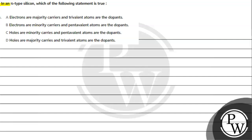Let's see the question. The question says: in an n-type silicon, which of the following statement is true? Option A: electrons are majority carriers and trivalent atoms are the dopants. Option B: electrons are minority carriers and pentavalent atoms are the dopants. Option C: holes are minority carriers and pentavalent atoms are the dopants. Option D: holes are majority carriers and trivalent atoms are the dopants.